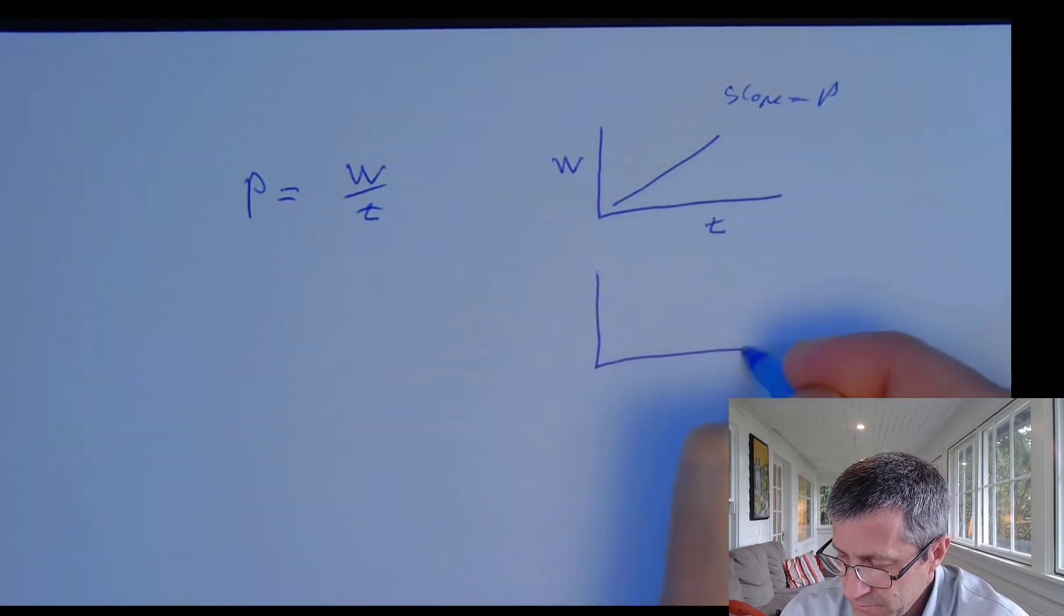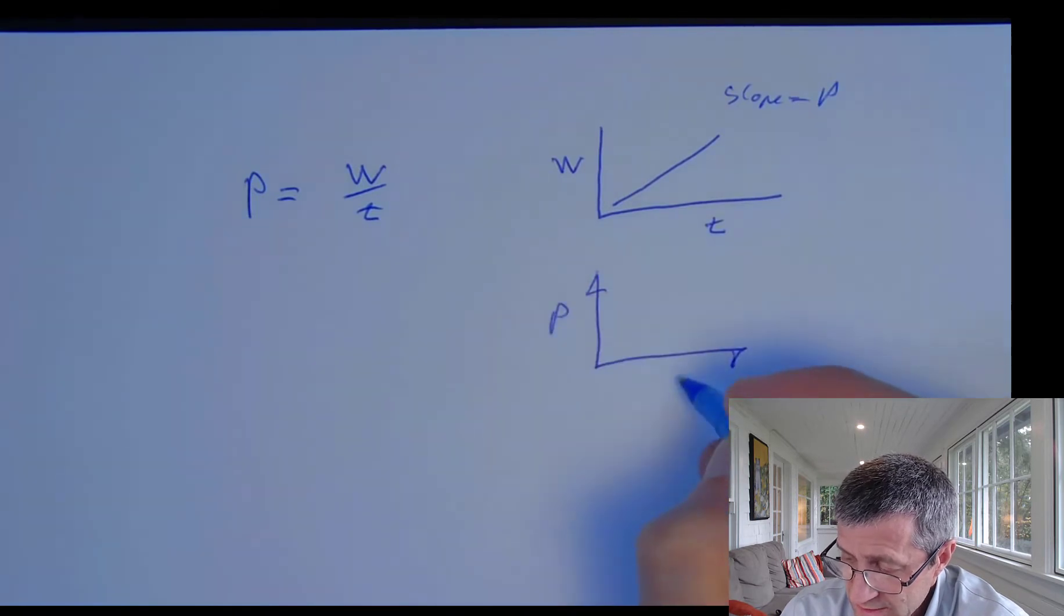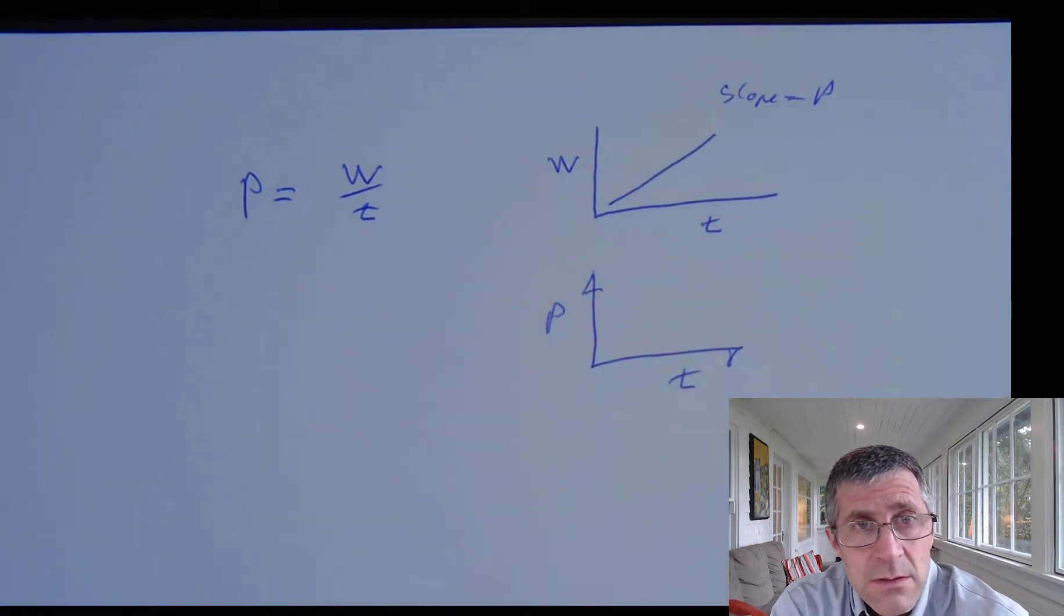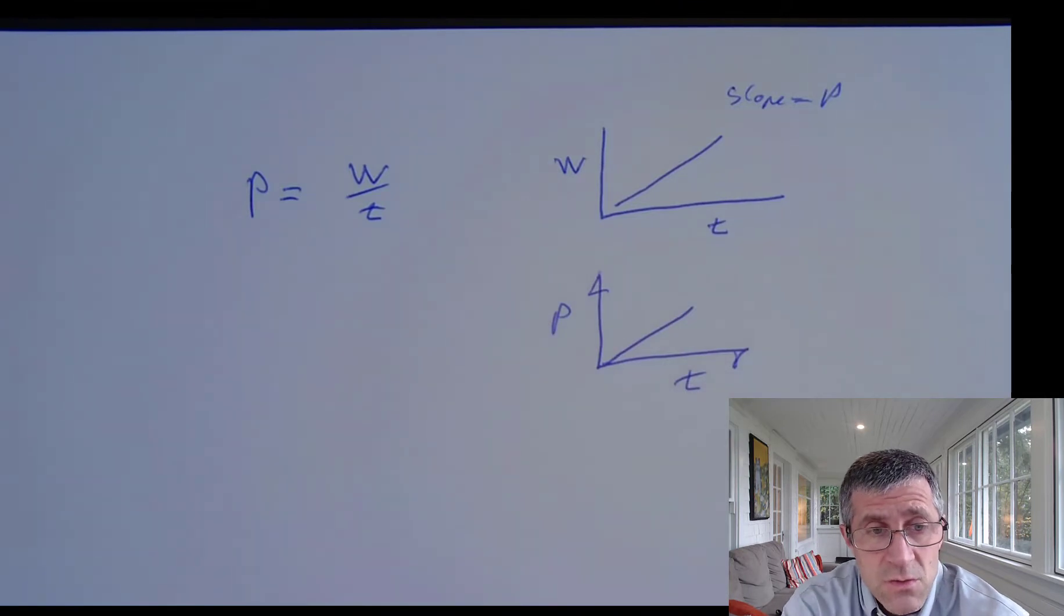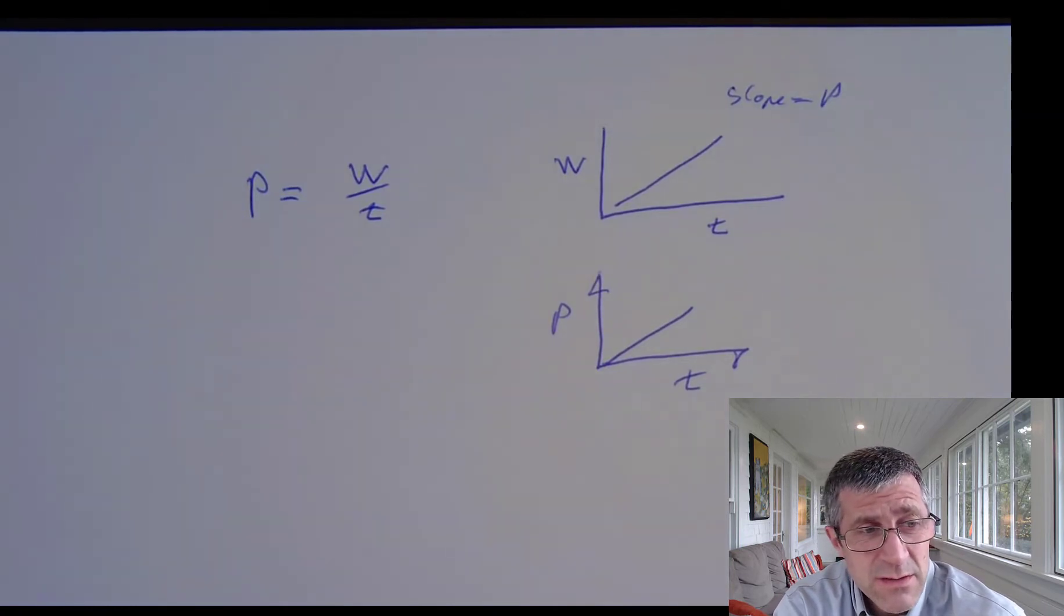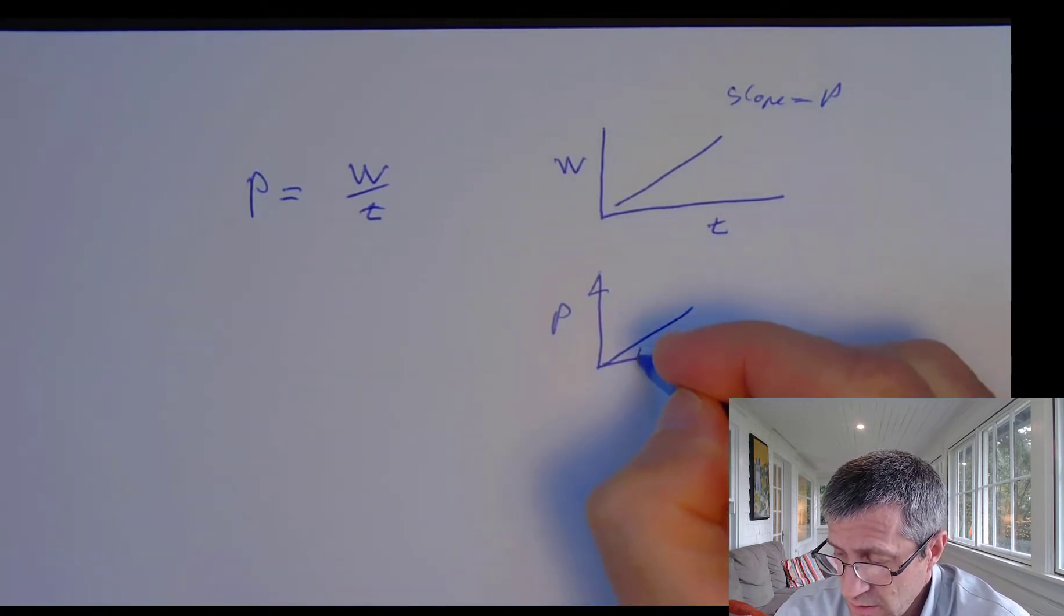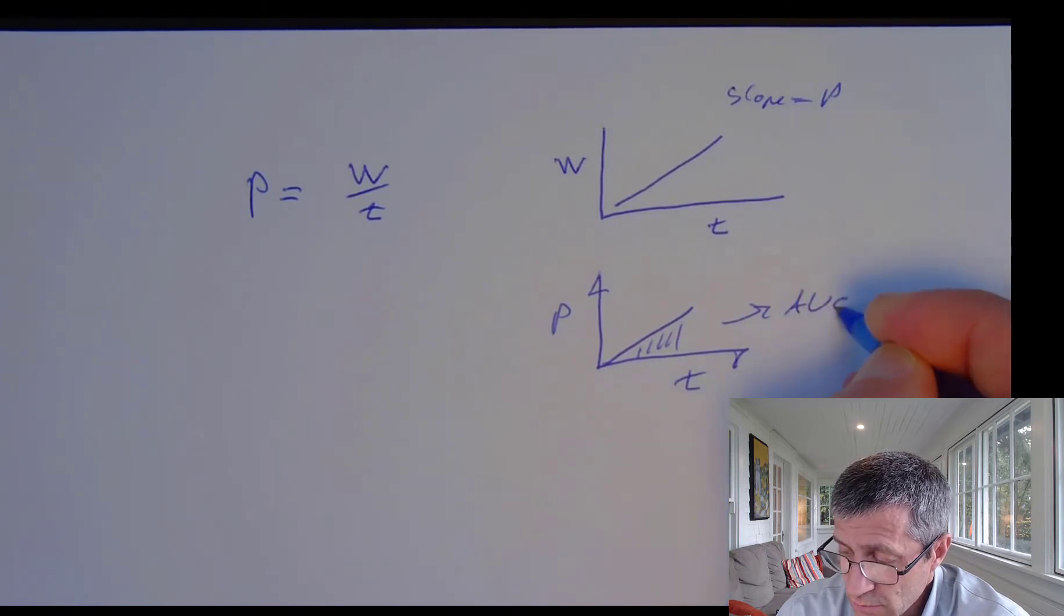If I graph power versus time, the slope doesn't tell me much that's interesting, but power times time would tell me about the amount of work. So in this case, the area under the curve is going to be the amount of work that was done.